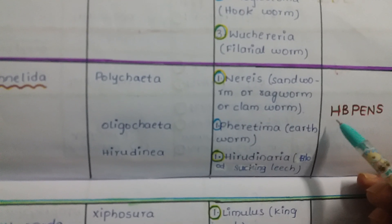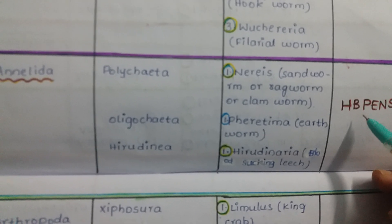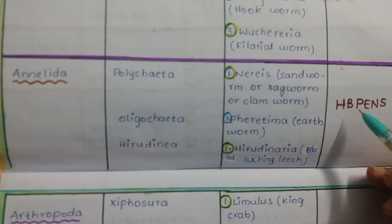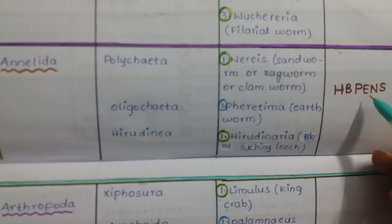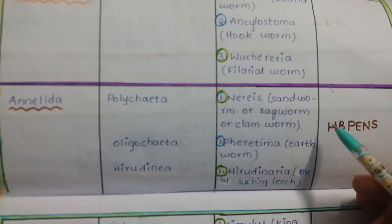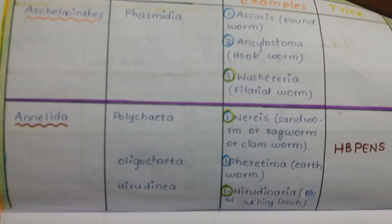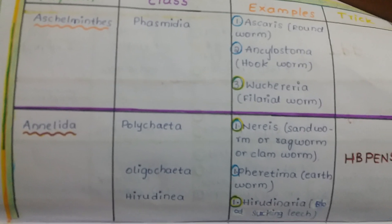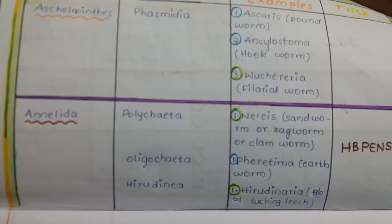For phylum Annelida, there are three examples. The trick is HB Pens: H for Hirudinaria (blood-sucking leech), B for blood-sucking leech common name, P for Pheretima (earthworm), and Nereis (sandworm). In the next video we will learn more tricks — keep watching and take care.